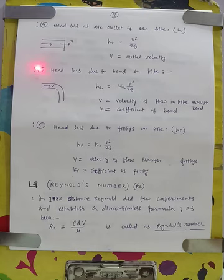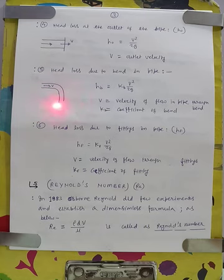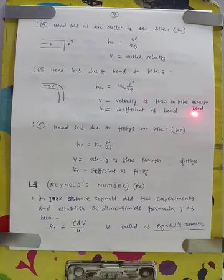Loss number five is head loss due to bend in the pipe. Suppose there is a bend in the pipe and fluid is flowing through it. At the bend, there will be a loss of head given by H subscript B = K_B × V² / 2g, where V is the velocity of flow through the pipe at the bend and K_B is the coefficient of the bend.